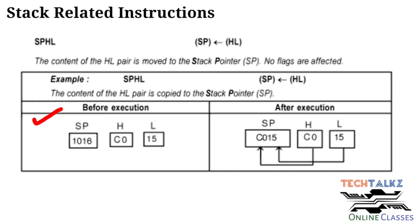Example: Before executing the instruction, the stack pointer value is 1016, H register value is C0, and L register value is 15. After the instruction is executed, the content of the HL pair is copied to the stack pointer, so the stack pointer value will become C015.